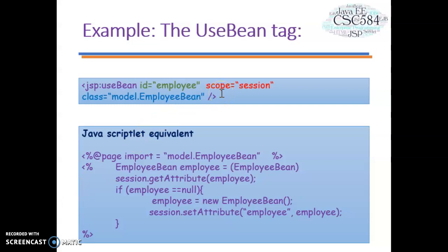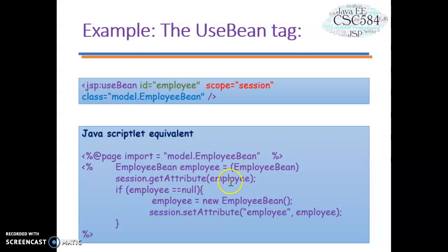Let's look at an example of the useBean tag. Take a look at the three parameters: ID is set to the bean object, scope is set to session, and class is set to model as the package with EmployeeBean as the class name. The JavaScript equivalent shows: employeeBean equals employeeBean from session.getAttribute('employee'). This checks whether the object has been created; if not, it instantiates a new object of EmployeeBean.